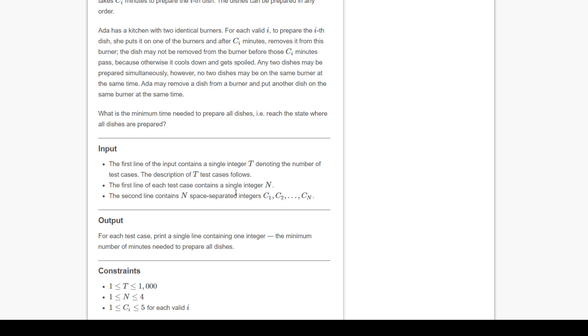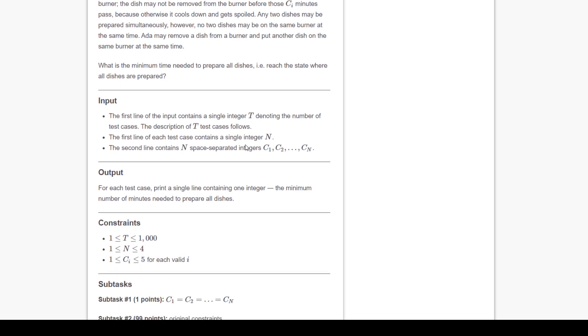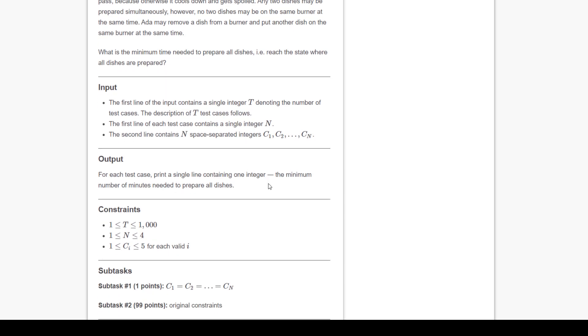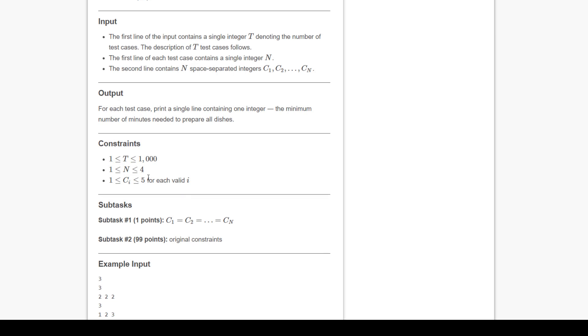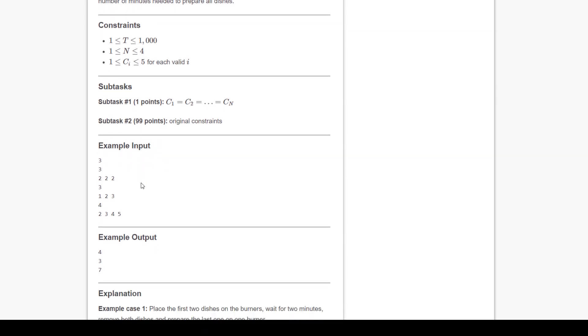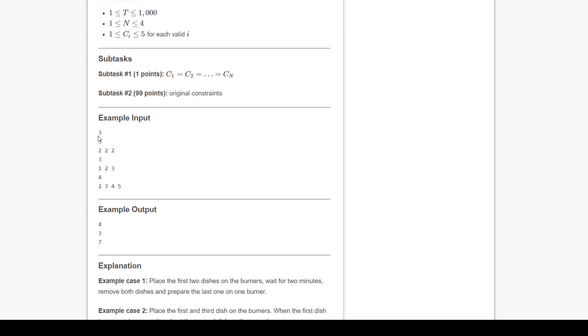The times are 2, 2, 2. We take the first and second dish—both take 2 minutes—kept on the burner. After two minutes both dishes are cooked. We can remove them and put the third dish on, so it takes a total of 4 minutes. You can see the output is 4. In the next test case we have three dishes: 1, 2, and 3. We can take the first and third dish together. After one minute the first dish is over and you can put the second dish there, so total required time is 3 minutes.